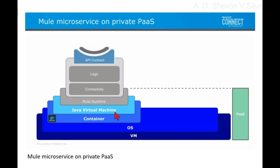Mule runtime interacts with the Java Virtual Machine, which interacts with the container. The container interacts with the OS, and the OS interacts with the VM. Together, the Mule runtime, Java Virtual Machine, container, OS, and VM form the PAAS stack.